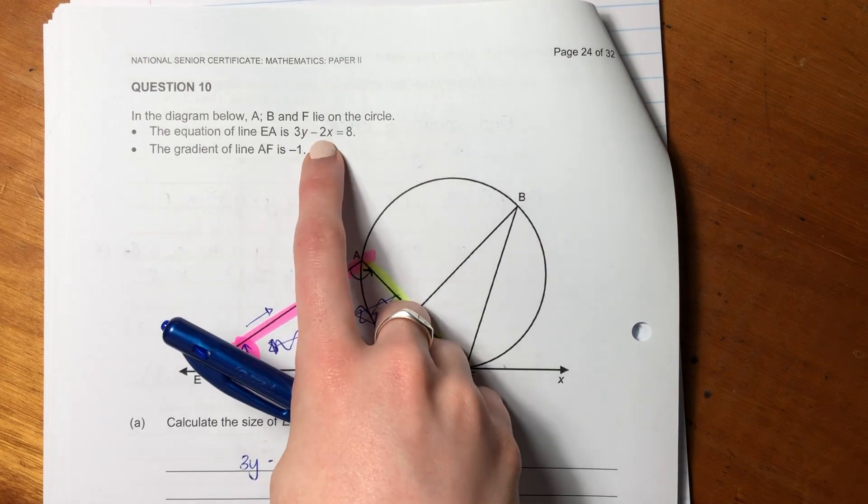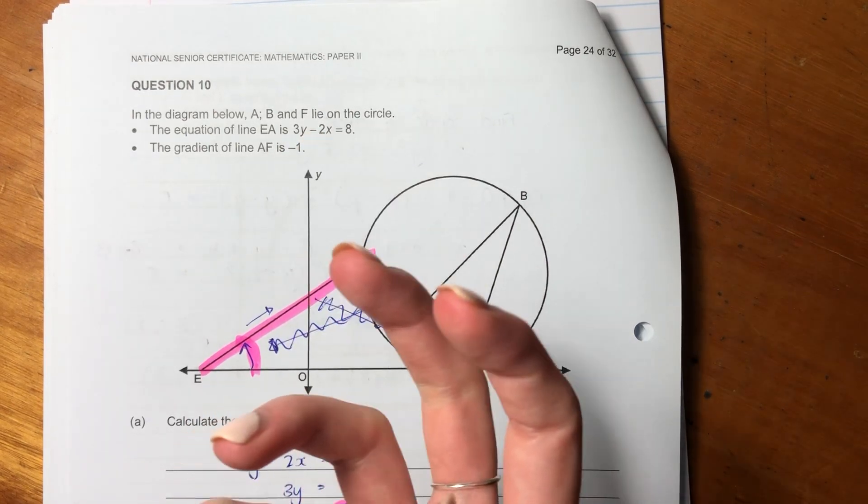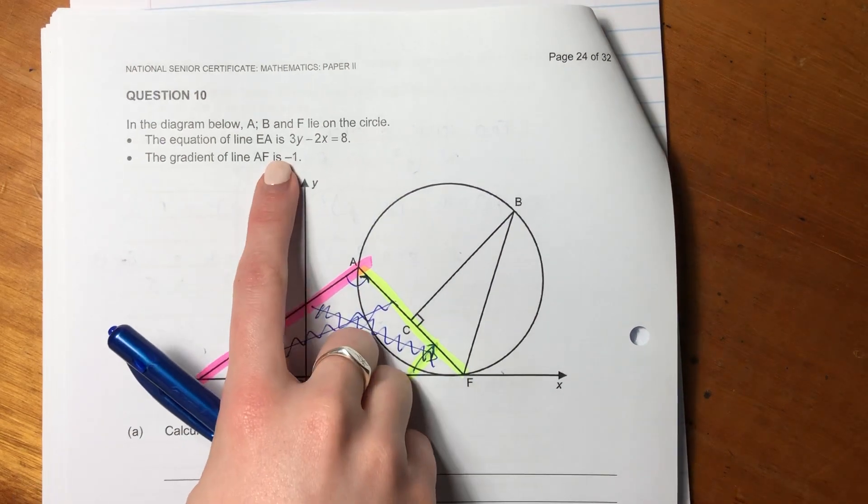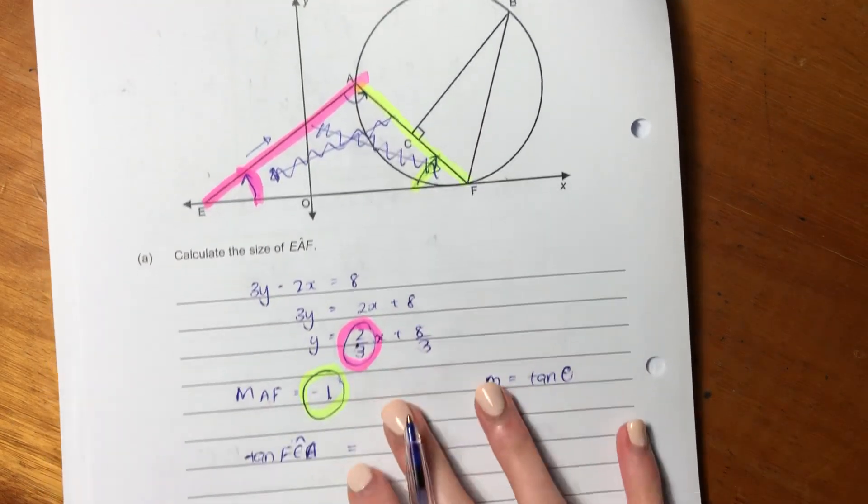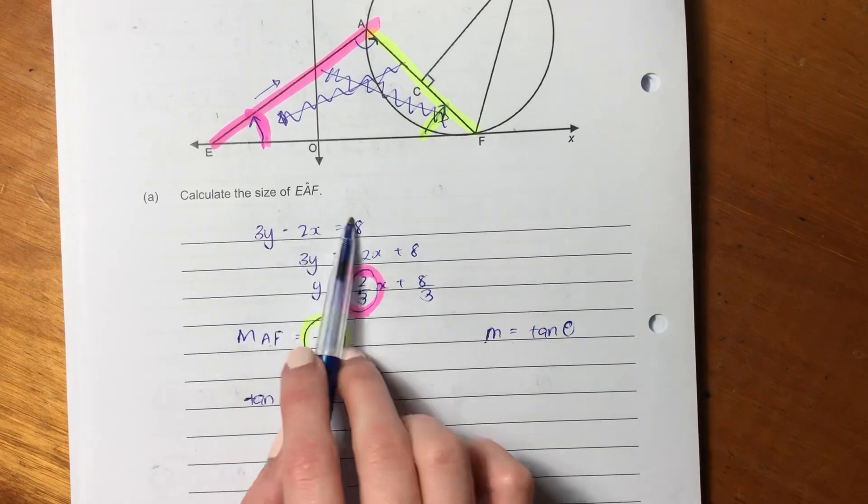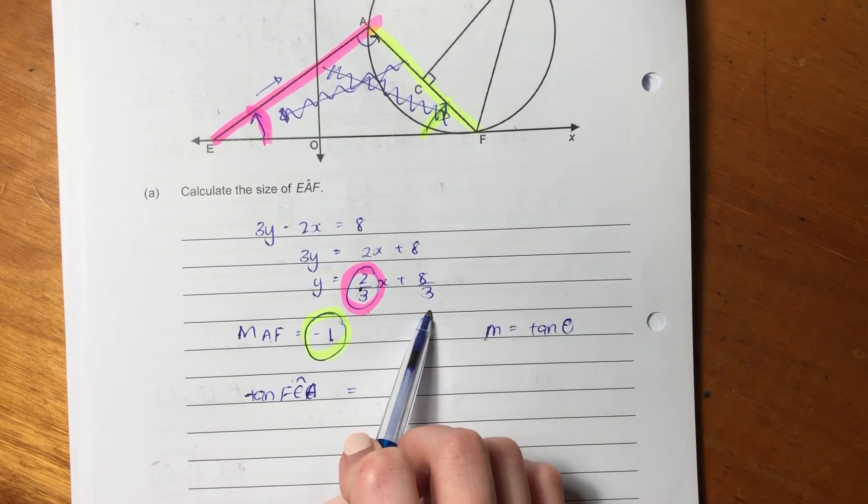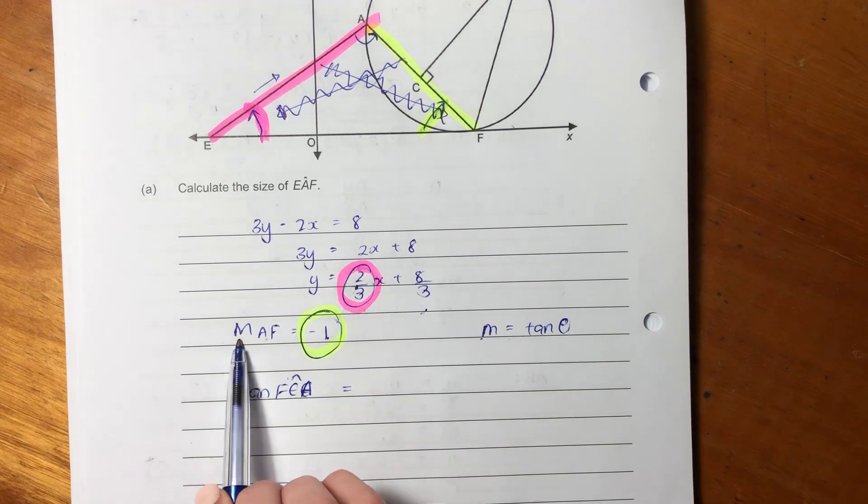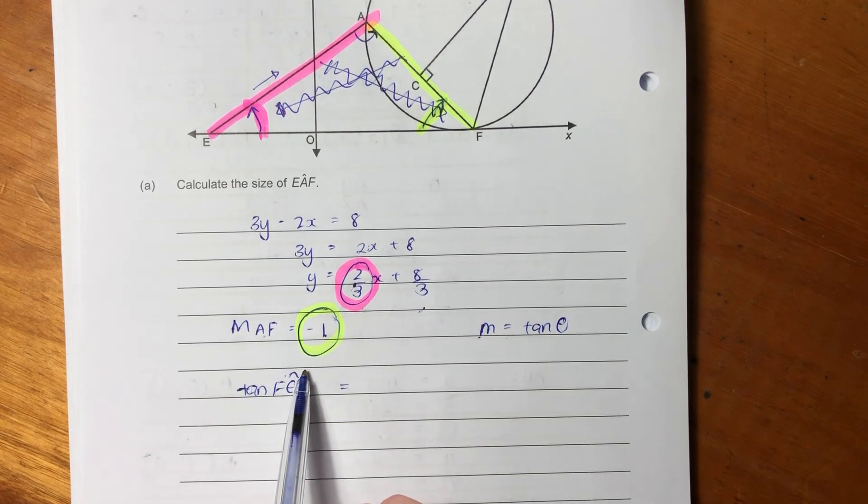So this is a straight line. We just need to manipulate it a little bit to make it look like our traditional y = mx + c, and we have the gradient there. So what I did is just that. I manipulated this to get it into our y = mx + c form, and the gradient of AF equals negative 1.